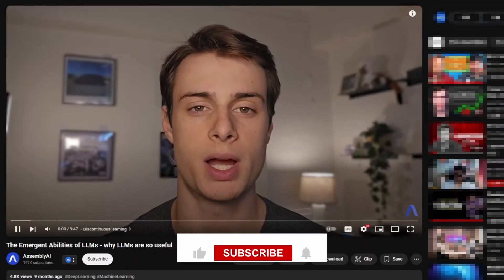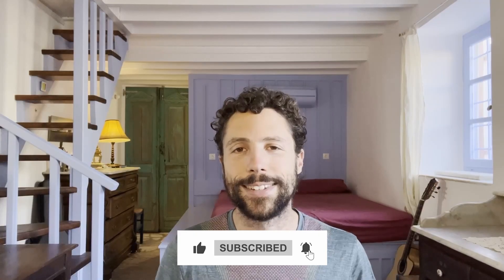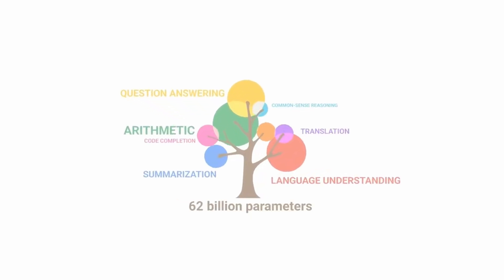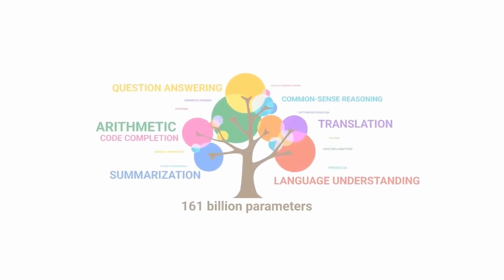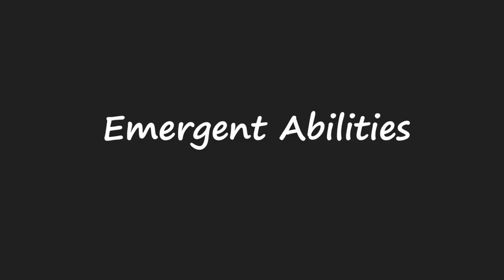If you want to learn more about LLMs' emerging abilities, check out Ryan's video on this topic. As LLMs get bigger, there are critical scales at which they're suddenly able to complete tasks like translation, summarization, and code completion without being trained to do so. These abilities are called emergent abilities, emerging at a particular scale — but are they truly emergent, or do they have a simpler explanation?